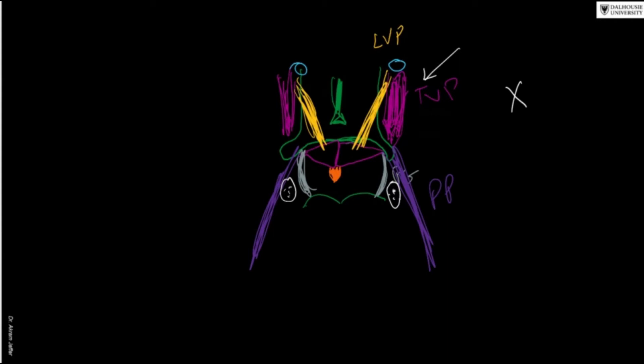The uvula should always be located in the middle. We can use the location of the uvula to test the integrity of the vagus nerve. You tell the patient to open the mouth and say 'ah,' and in that case the soft palate should be elevated.